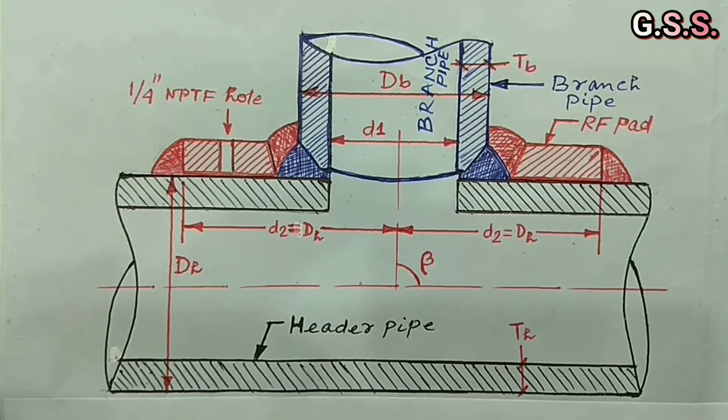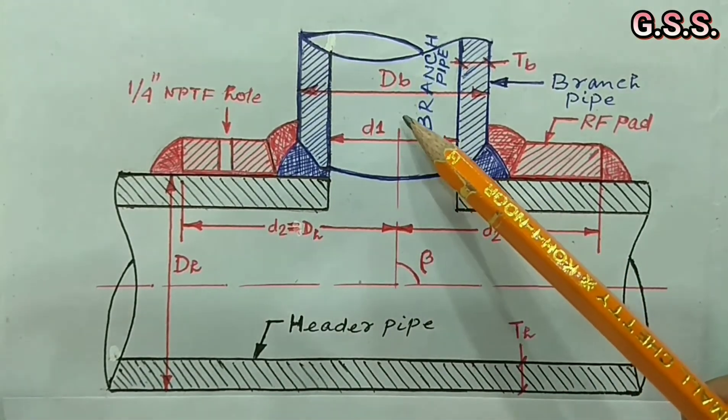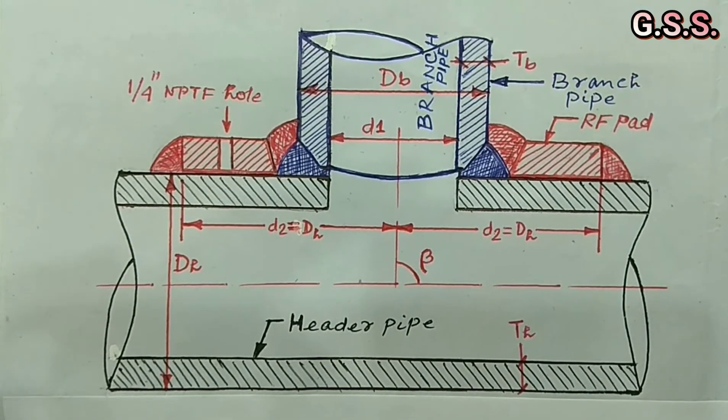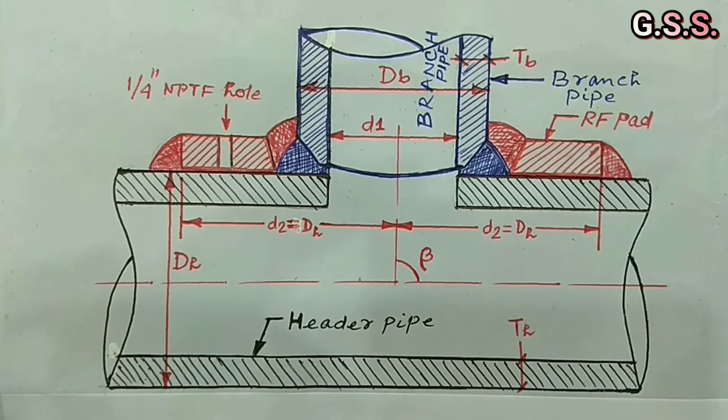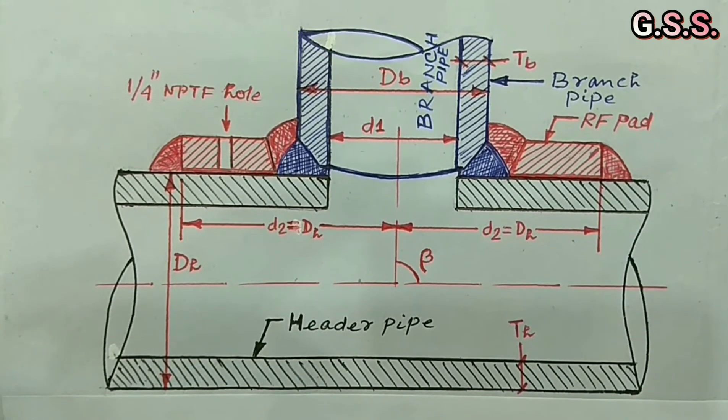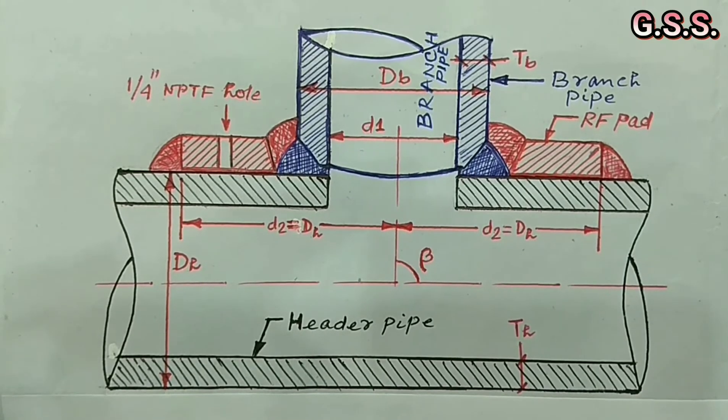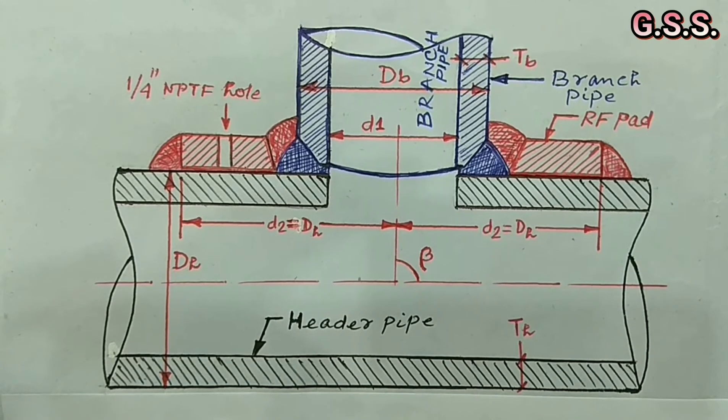Pipe to pipe direct branching is applicable for branch size of 2 inch and above. In case of direct branching, we have to perform two checkpoints. One checkpoint is branch calculation from internal design pressure point of view as per ASME B31.3, and another checkpoint is whether the branch is safe from pipe stress point of view.